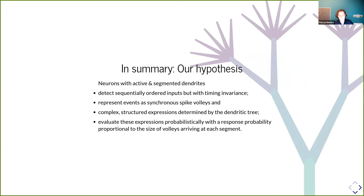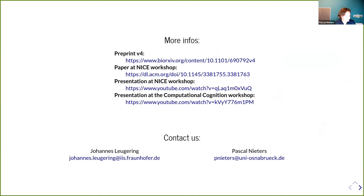Structural plasticity is also critical: our model relies heavily on where synapses are placed in the dendritic tree, not just the weights of individual synapses. There is evidence that synapse location changes happen in the brain, but incorporating structural plasticity into the model cannot rely on gradient descent or full backprop rules — it would have the greatest impact on the types of functions that can be efficiently learned. Our grand hypothesis is that neurons with active, segmented dendrites detect sequentially ordered inputs with timing invariance.